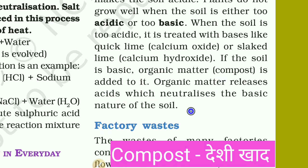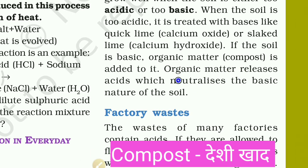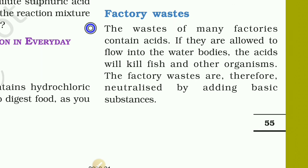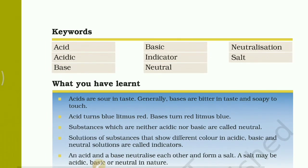Organic matter releases acid which neutralizes the basic nature of the soil. Factory waste often contains acid. If it is allowed to flow into water bodies, the acid will kill fish and other organisms. Therefore, factory waste is neutralized by adding a basic substance before being released.